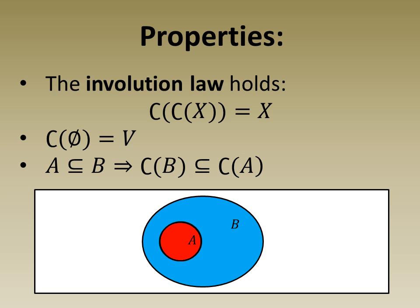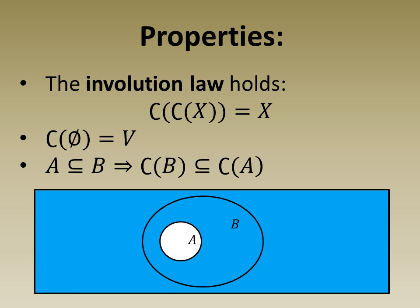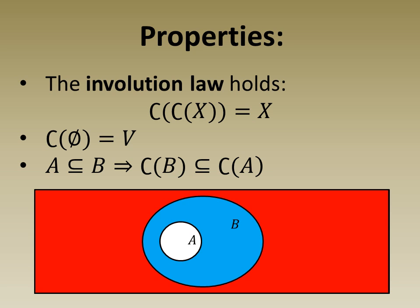Below, we show this with a Venn diagram. First, we see that A is a subset of B. Now, we color the complement of A blue and the complement of B red and see that the complement of B is a subset of the complement of A.